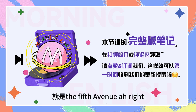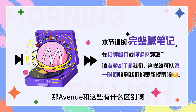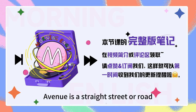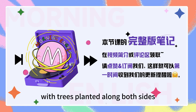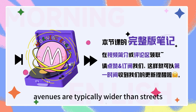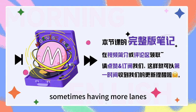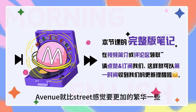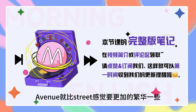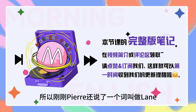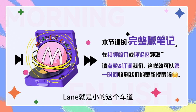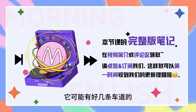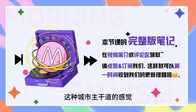还有一个就是有点confusing的，就是 the Fifth Avenue. 那avenue和这些有什么区别? You find avenues typically in cities. An avenue is a straight street or road with trees planted along both sides. Avenues are typically wider than streets, sometimes having more lanes and therefore more traffic. 所以avenue就比street感觉要更加繁华一些。刚刚Peter还说了一个词就叫做lane，lane就是小的车道，比如说 do not hog the middle lane。所以avenue通常就会比较宽，它可能有好几条车道，是城市主干道的感觉。